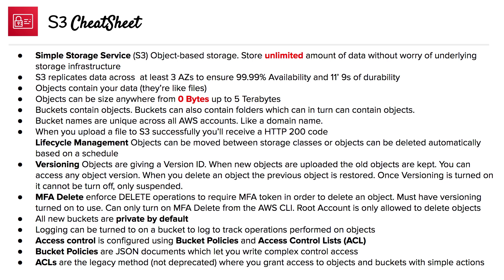All new buckets are private by default. Logging can be turned on a bucket so you can track all the operations performed on objects. Access control is configured using either bucket policies or access control lists. Bucket policies are JSON documents which let you write complex access control. ACLs are the legacy method that came before bucket policies — they're not deprecated, so there's no issue in using them, but they're just not used as often anymore. ACLs allow you to grant access to objects and buckets with simple actions.